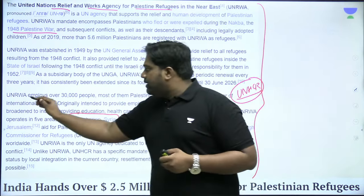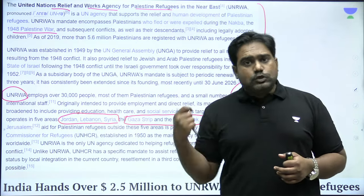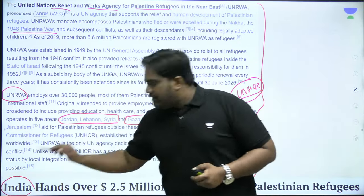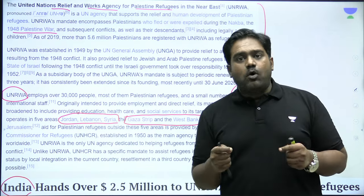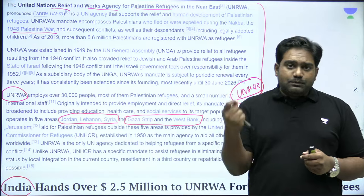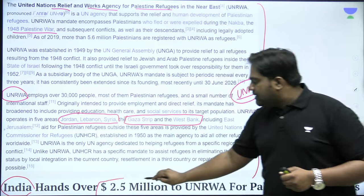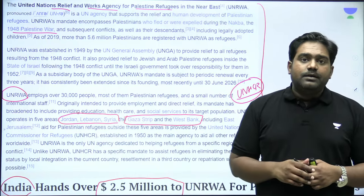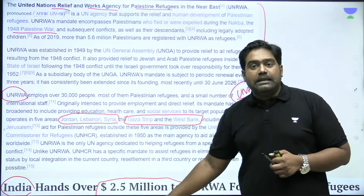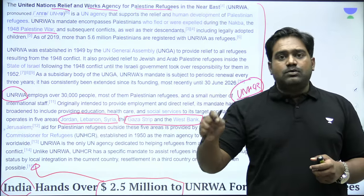UNRWA receives donations from UN members around the world, and various organizations also donate to it. India is one of the big donors — since we ideologically support the right of Palestinians to have their own state and stand with Palestinians regarding human rights violations, India keeps donating to UNRWA. Recently, after the Gaza War began, in December 2023, India transferred another $2.5 million to assist Palestinian refugees through UNRWA.